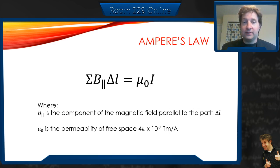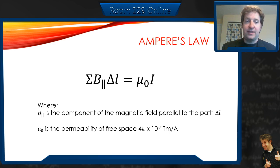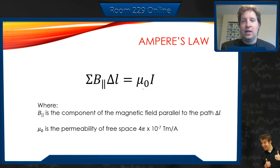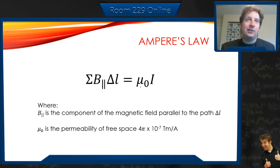Before we go on, a nice summary slide. This is what we mean by Ampere's law: the sum of all those components parallel to the little delta L's, multiplied by the delta L's themselves, added all up, is equal or proportional to the current. It's proportional by mu naught, which we saw last year when we looked at solenoids. This is the permeability of free space — it allows us to look at how magnetic fields flow through space, essentially the resistance of the vacuum to magnetic fields. It's equal to 4π × 10⁻⁷ tesla·meters per amp.